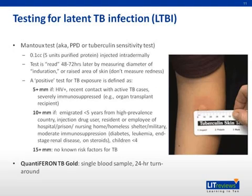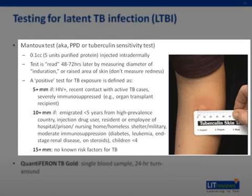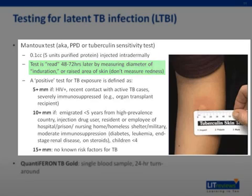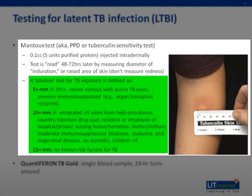Testing for latent TB is usually performed with the Mantoux test, also known as the PPD or tuberculin sensitivity test. The test is performed by injecting five units of purified protein, or 0.1 cc's intradermally. The patient is brought back 48 to 72 hours later to have their arm read. You read the test by looking at the arm and feeling for the area that's indurated — the area that is raised — and measuring the diameter of the raised area. It's important to note this is not the diameter of the erythematous or red area, but rather the area that is raised. A positive test is defined as 5 millimeters in diameter if the patient is HIV positive, a known recent contact with an active TB case, or severely immunosuppressed, such as a patient who had an organ transplant and is on chronic steroids.